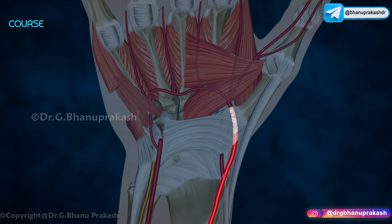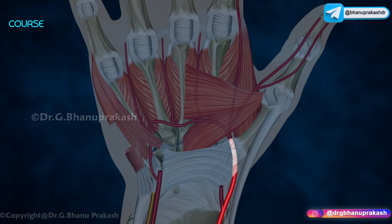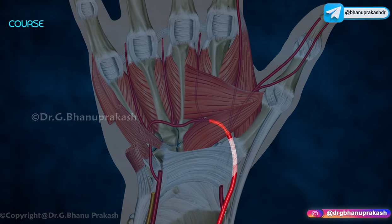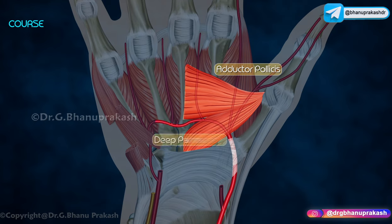After passing over the dorsal aspect of the base of the thumb, the radial artery re-enters the palmar side of the hand between the two heads of the first dorsal interosseous muscle. Then in the palm it passes between the two heads of the adductor pollicis and continues as the deep palmar arch, which anastomoses with the deep branch of the ulnar artery.